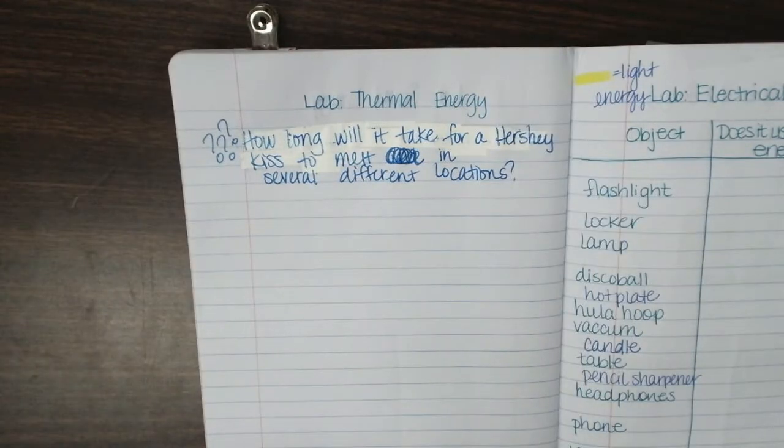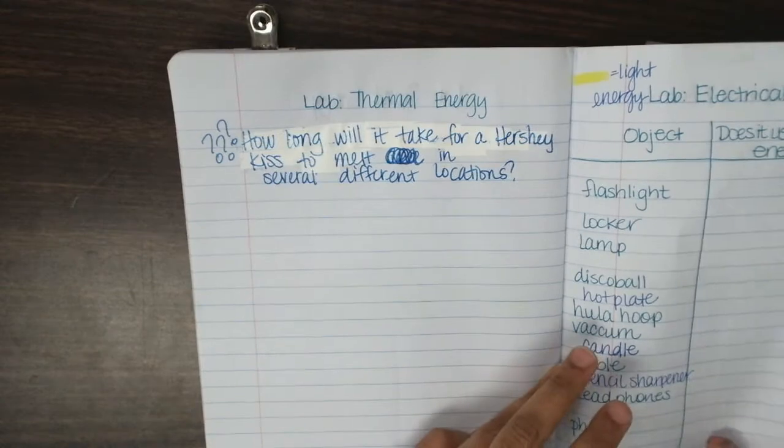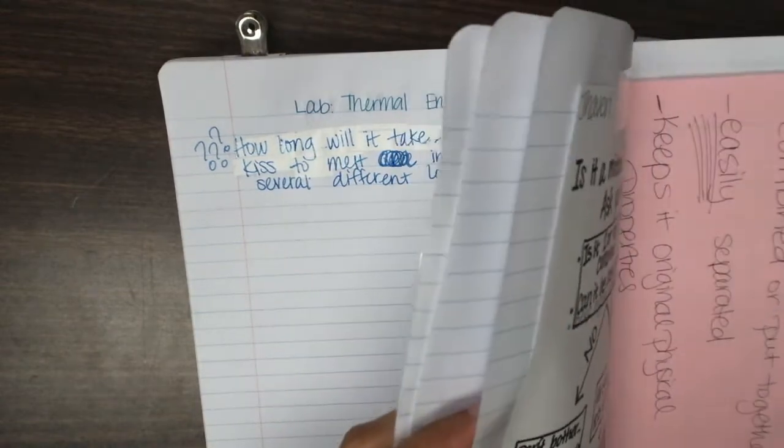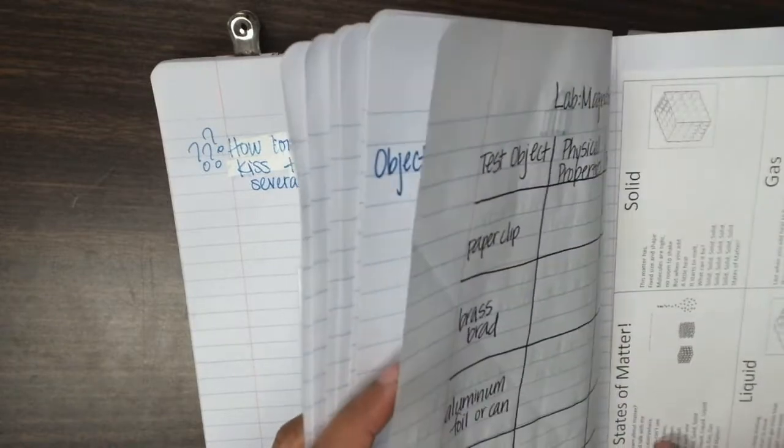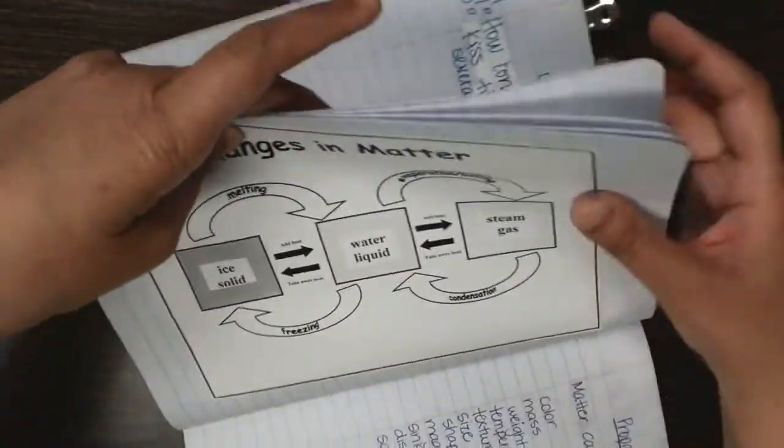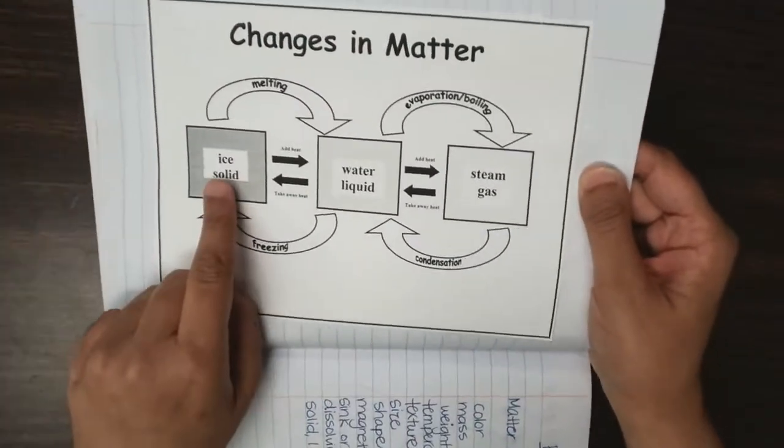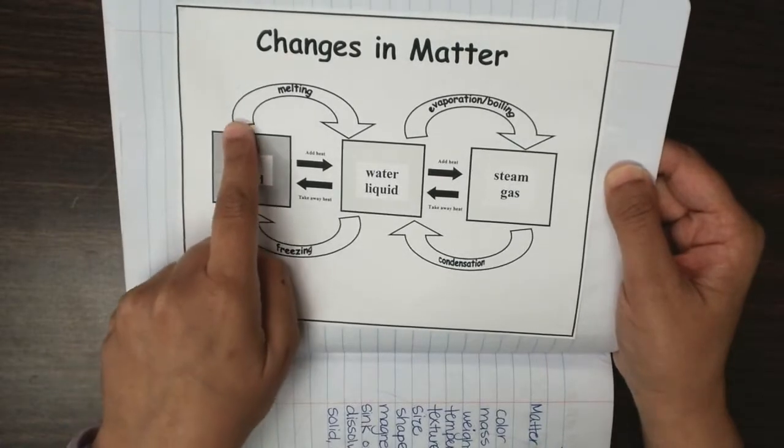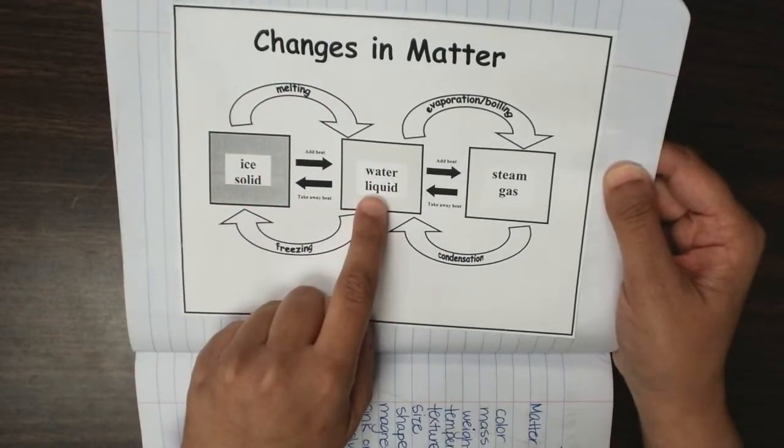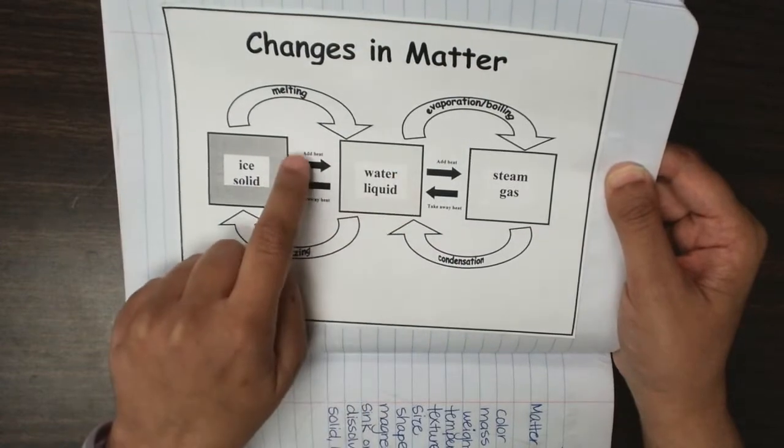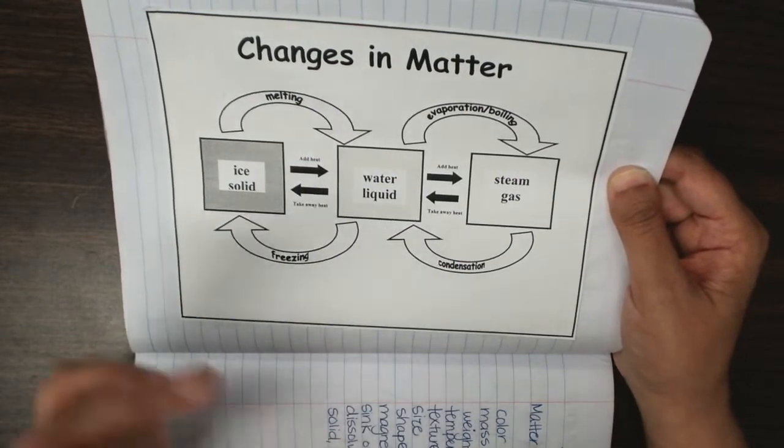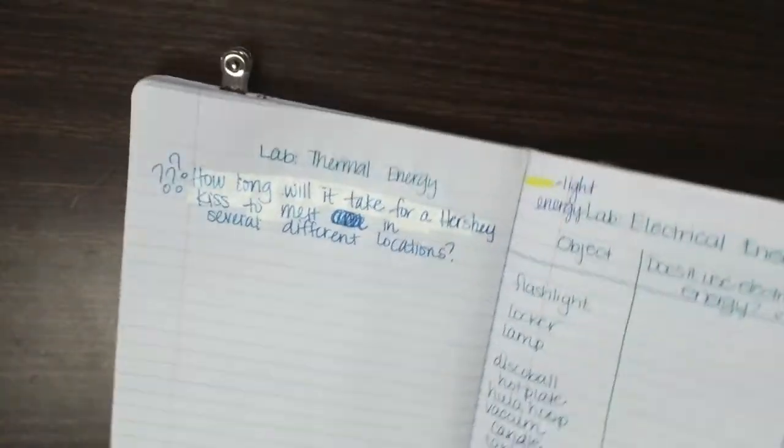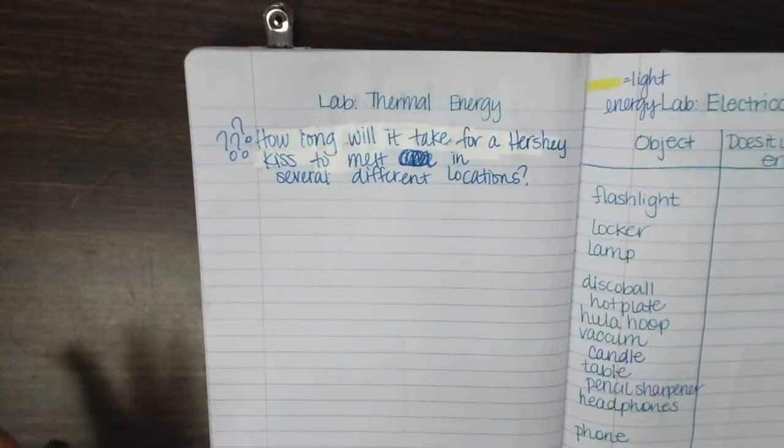So one thing I want you to know is that if you remember from our previous labs, when you add heat, right, you're going to take something that's a solid and it's going to melt into a liquid. When you add heat, it will turn into a liquid. Now, it depends how much heat you're adding.